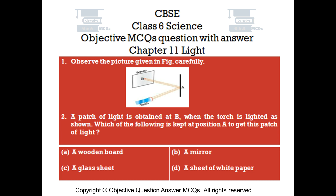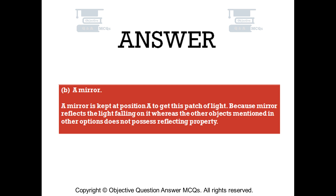Question number 1. Observe the picture given in the figure carefully. A patch of light is obtained at B when the torch is lighted as shown. Which of the following is kept at position A to get this patch of light? Option A: a wooden board. Option B: a mirror. Option C: a glass sheet. Option D: a sheet of white paper. The right answer is option B — a mirror. A mirror is kept at position A to get this patch of light, because a mirror reflects the light falling on it, whereas the other objects mentioned do not possess reflecting property.